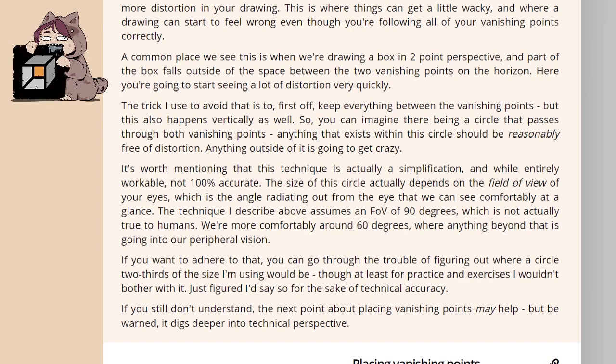A common place we see this is when we are drawing a box in two-point perspective and part of the box falls outside of the space between the two vanishing points on the horizon. Here you are going to start seeing a lot of distortion very quickly. The trick I use to avoid this is to, first off, keep everything between the vanishing points, but this also happens vertically as well. So you can imagine there being a circle that passes through both vanishing points. Anything that exists within this circle should be reasonably free of distortion. Anything outside of it is going to get crazy.